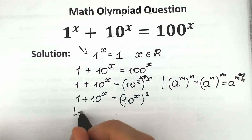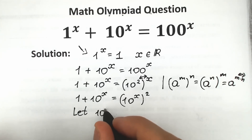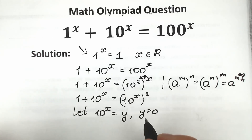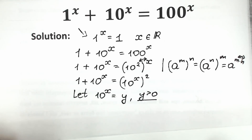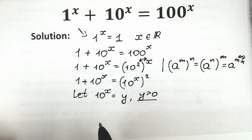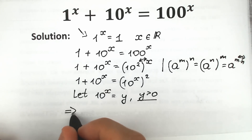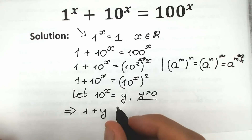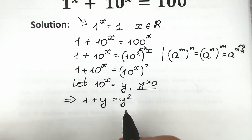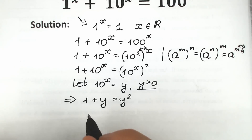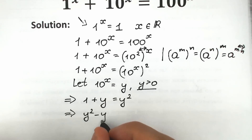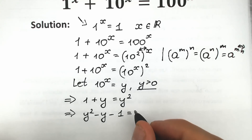Let's write a substitution: let y equal 10 to the power x, where y is positive because this is an exponential function. Substituting, we replace 10 to the power x with y, and 10 to the power 2x with y squared. So we have: 1 plus y equals y squared. Let's rearrange — bring y squared to the left side and change the sign, giving us: y squared minus y minus 1 equals 0.